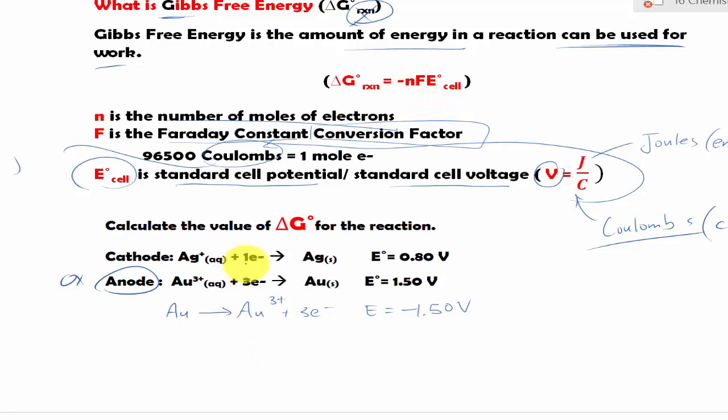Since this Ag has one electron, and this one has three electrons, so we need to balance it out by multiplying this by three. The exchange of electrons is three.